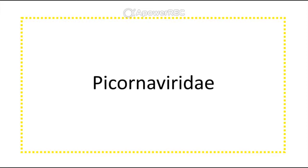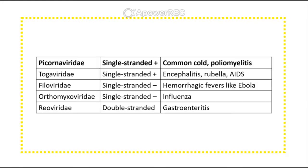Picornaviridae — this is a great table to study and memorize. Picornaviridae are single-stranded positive-sense RNA viruses. They can cause the common cold or poliomyelitis.